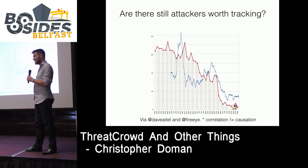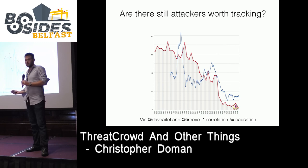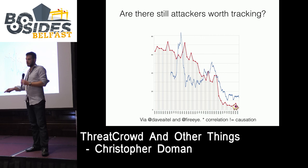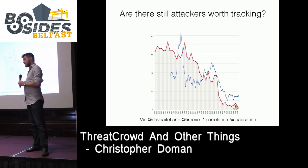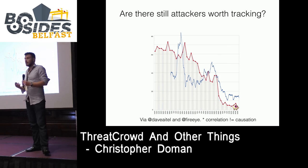This is a FireEye/Mandiant graph of their responses to what they say are Chinese groups — a pretty clear drop-off. I think they have pretty good data here as much as anyone in the private sector. Also given that they investigate these things and attacks may have started a year beforehand, you'd shift that graph back a year. So for a lot of those groups that are easy to track and we've all been tracking for a long time, there are less of them to track.